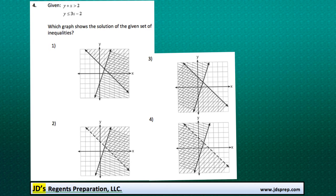This is problem number four from the June 2014 Algebra Regents exam. So what we're given here is two, or a system of inequalities, these two inequalities here, and we need to find out which one of these graphs represents the solution.